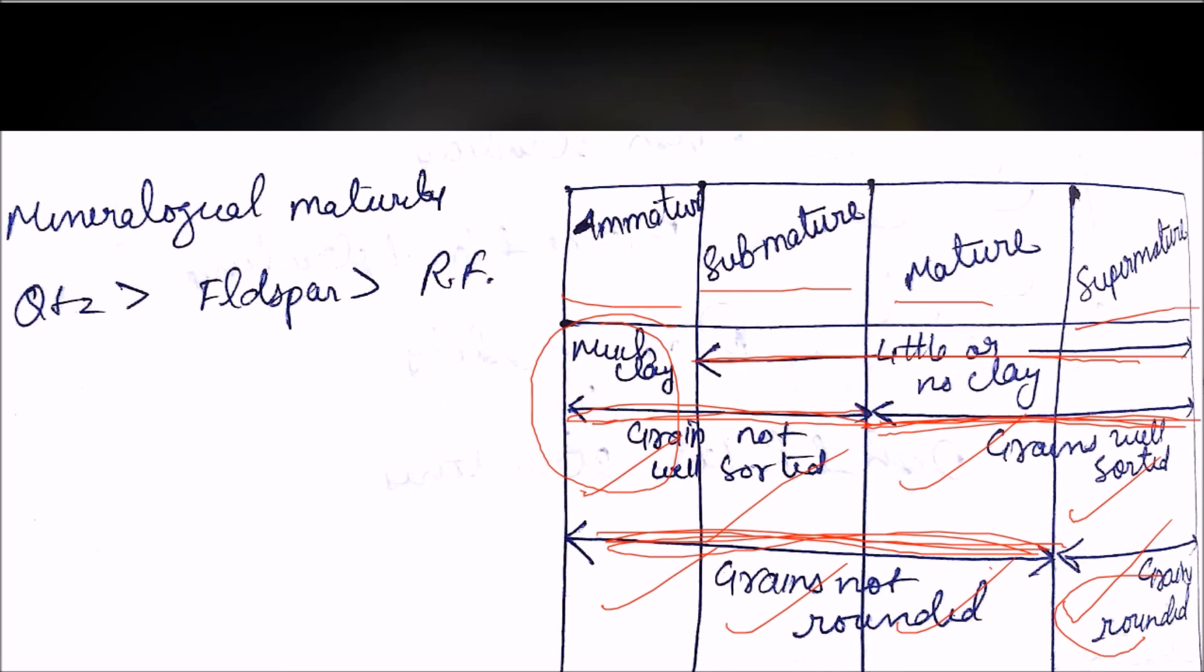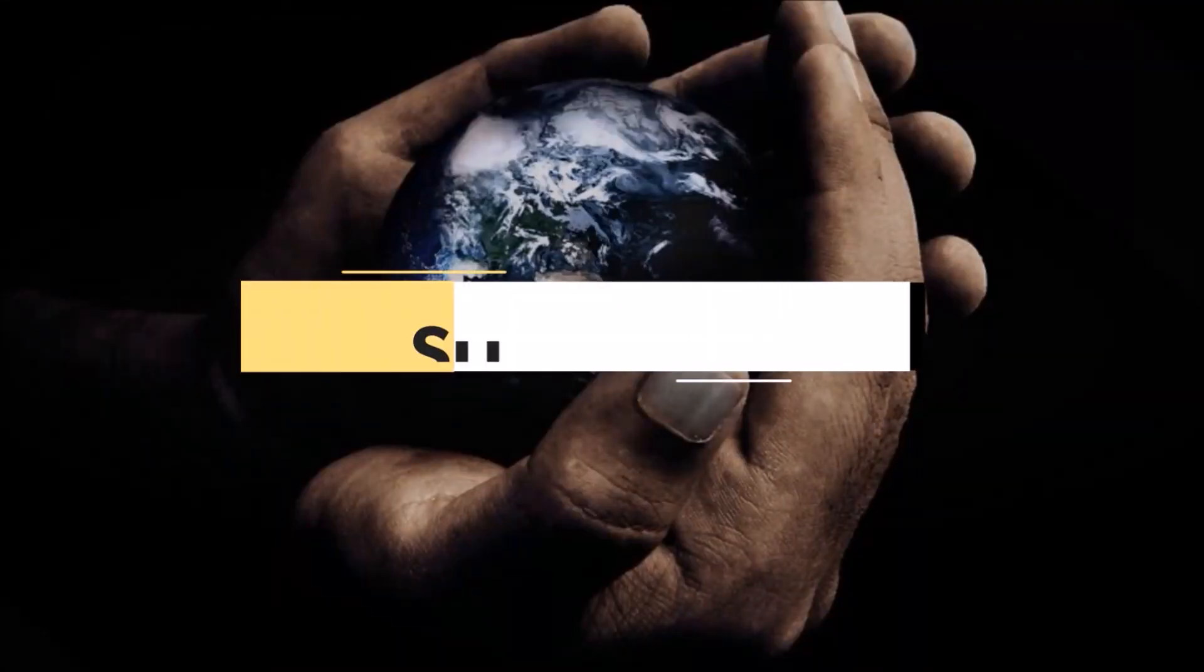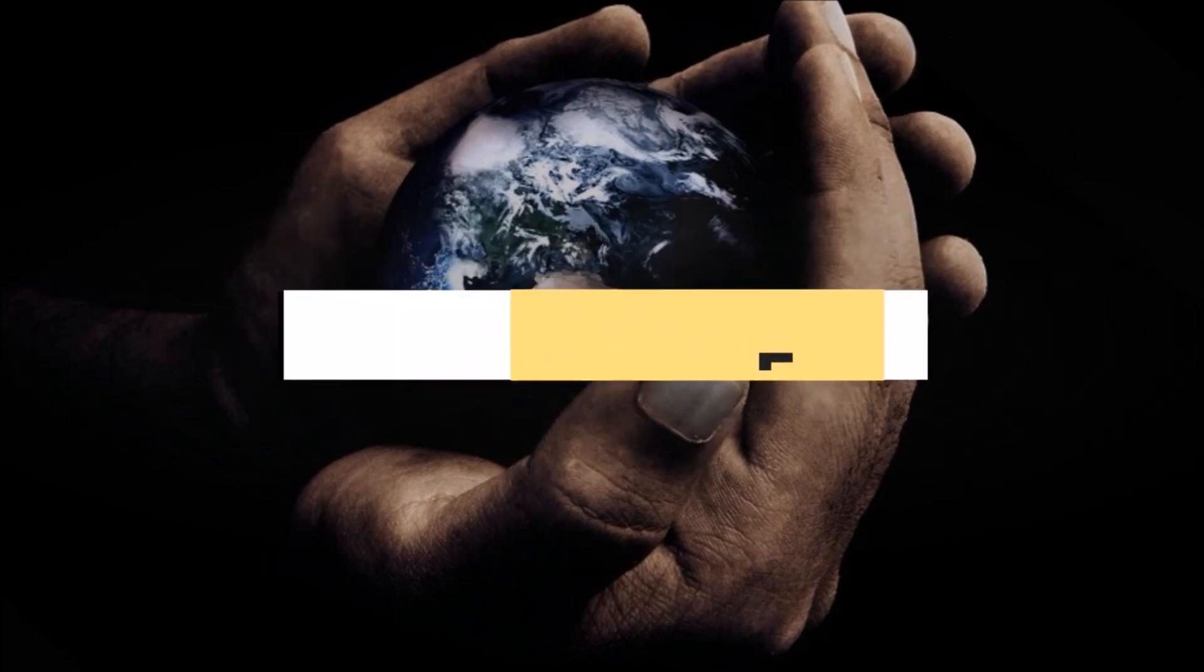So these were the basics of sedimentology and rock classification. In the next lecture we will go through the classification or the types of clastic rocks that includes conglomerate, breccias, sandstone classification, and mud rocks. So till then keep revising, and bye for now. Subscribe to know your planet better.